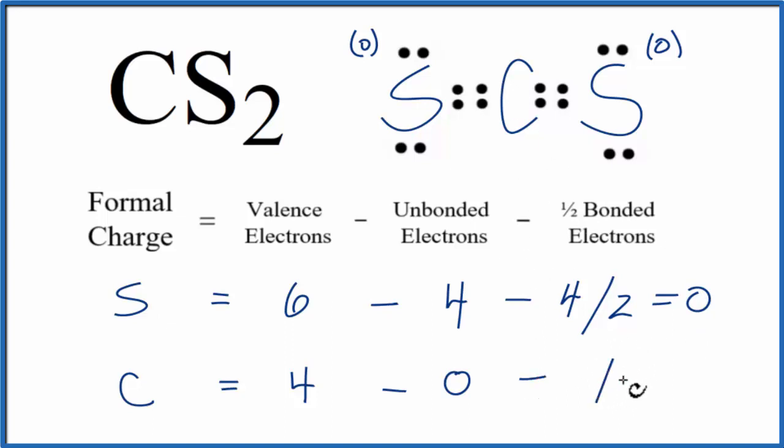Then we'll subtract 1 half of the bonded. 2, 4, 6, 8. 4 minus 0 minus 4, that equals 0. So the formal charge on the carbon here is 0.